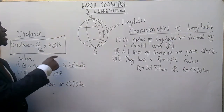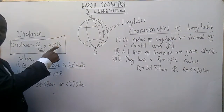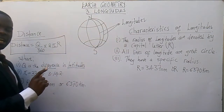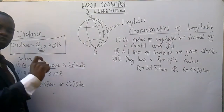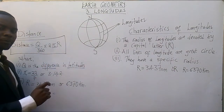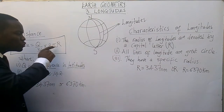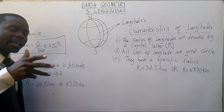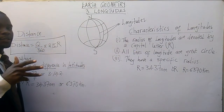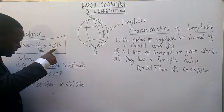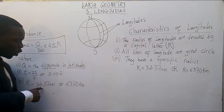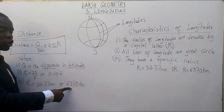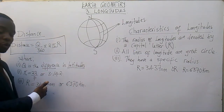As mentioned in the first characteristic, the radius of the longitudes is represented by a capital R. So whenever you see this capital R in the formula, it refers to the radius of the longitude — either 3,437 nautical miles or 6,370 kilometers. You will be advised which value of R to use.